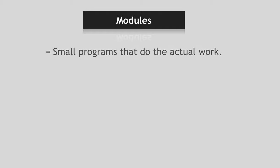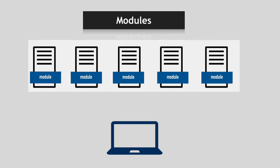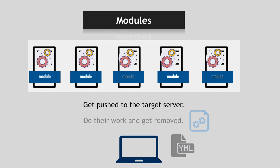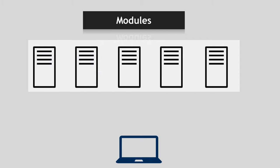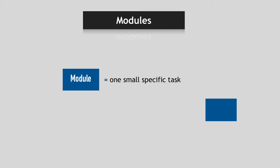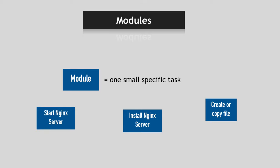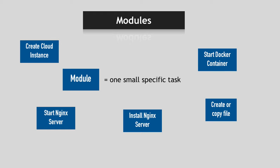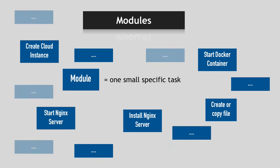Ansible works with modules, and modules are basically small programs that do the actual work. They get sent from the control machine to the target server, do their job — like install an application, stop a process, apply firewall rules — and when they're done, they get removed. Modules are very granular: one module does one small specific task. You have a module to create or copy a file, a module to install an Nginx server, a module to start that Nginx server, start a Docker container, or create a cloud instance. Ansible has hundreds of such modules.